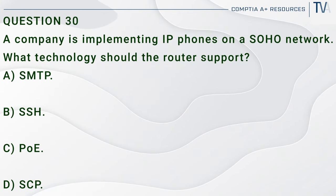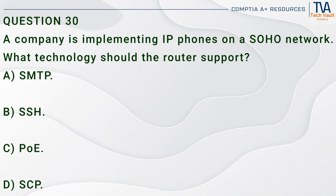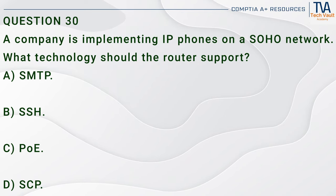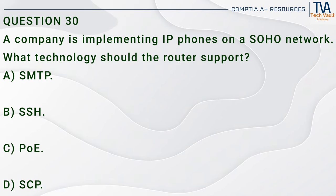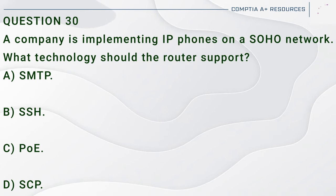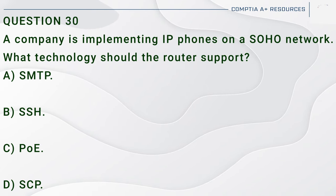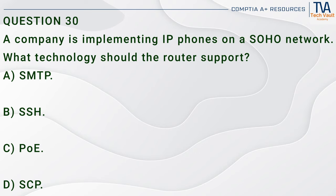Question 30. A company is implementing IP phones on a SOHO network. What technology should the router support? A. SMTP. B. SSH. C. PoE. D. SCP.